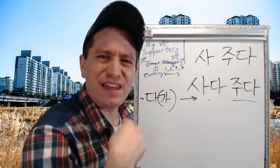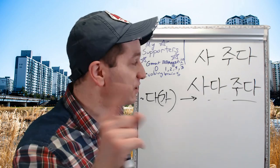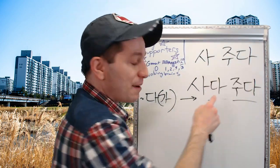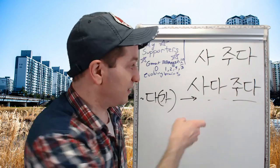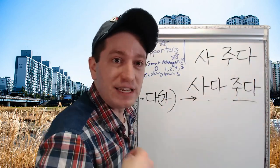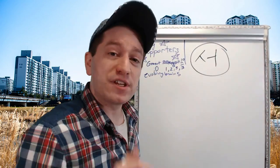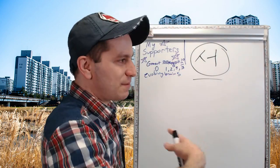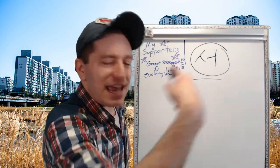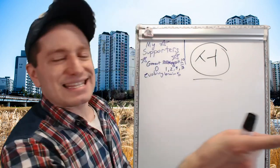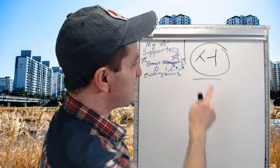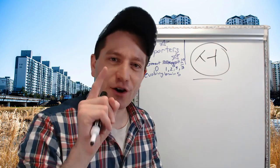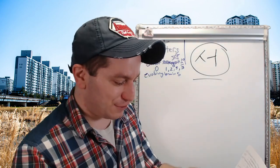So 사다 줘 means 'go buy it for me' — not just buying it for me like instead of me, but go to the store and bring it back. Most of the time Korean speakers will simply use the 서 form — doing something and then doing something else with that — except in cases where using the 서 form would be repetitive. I have an example of that coming up in a few more sentences.